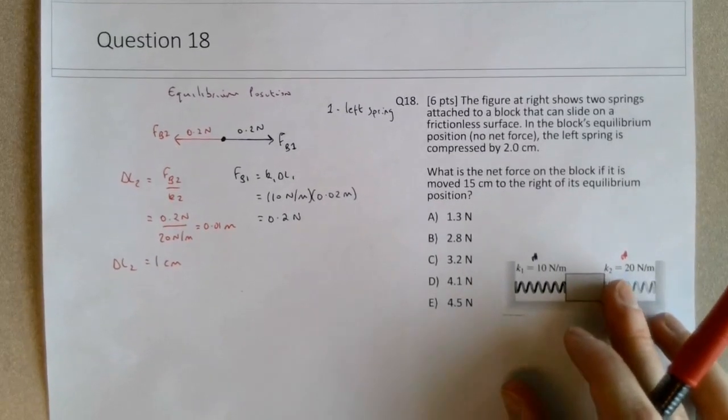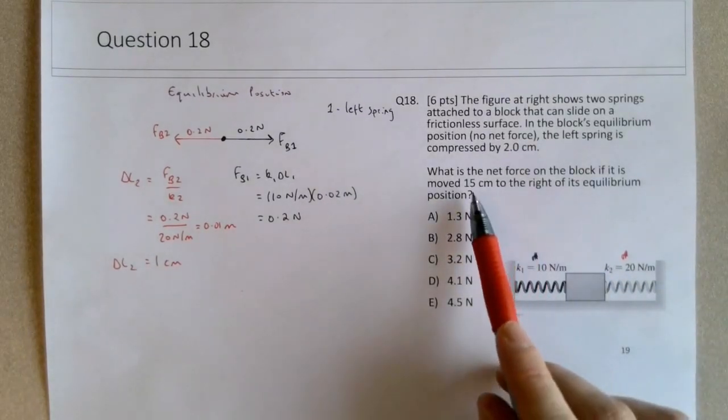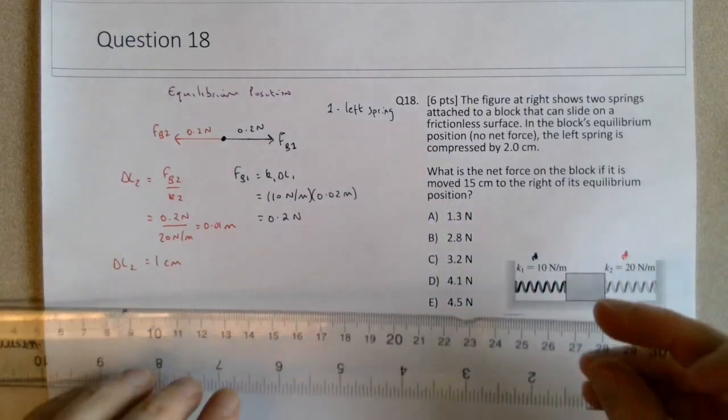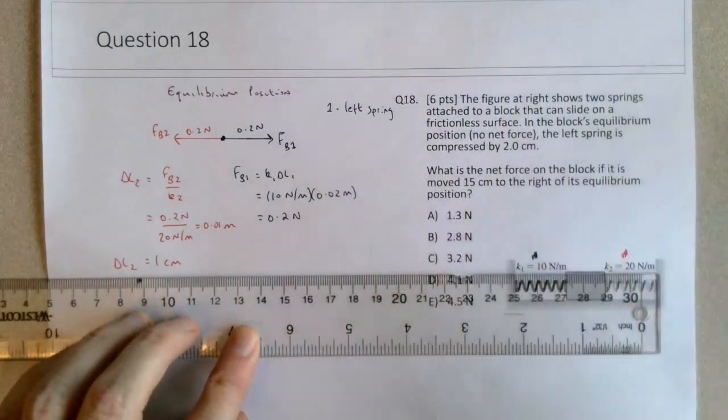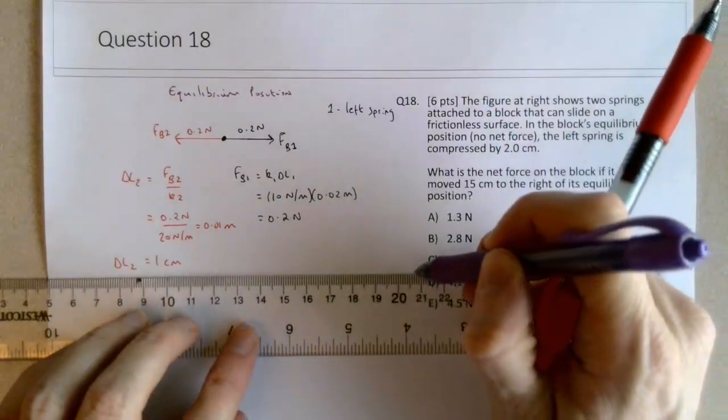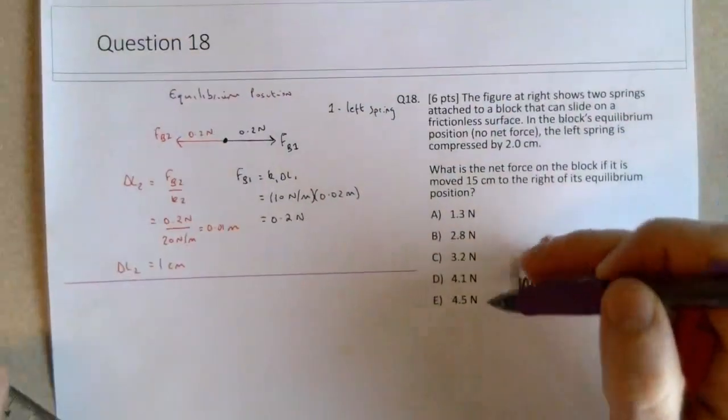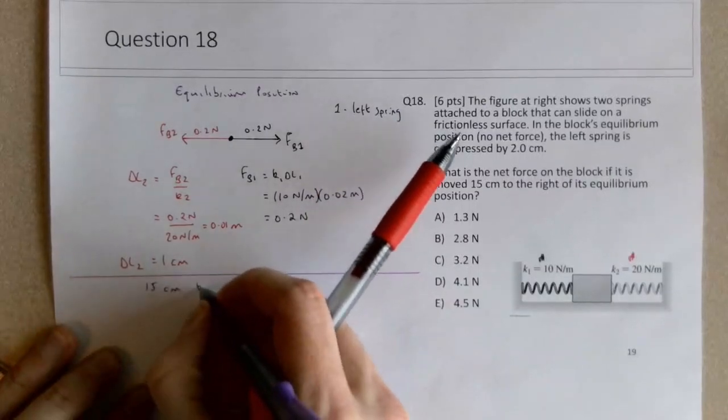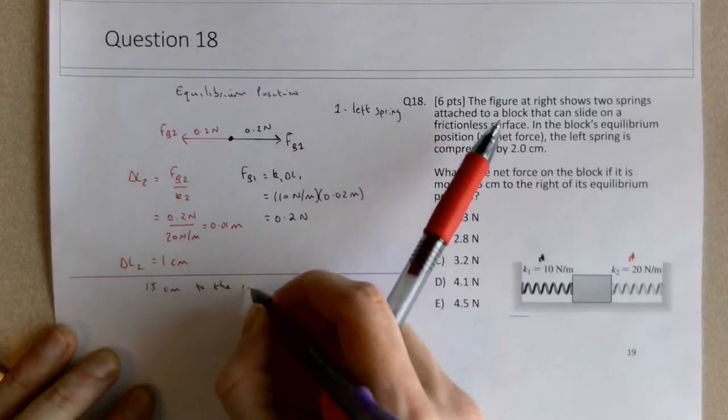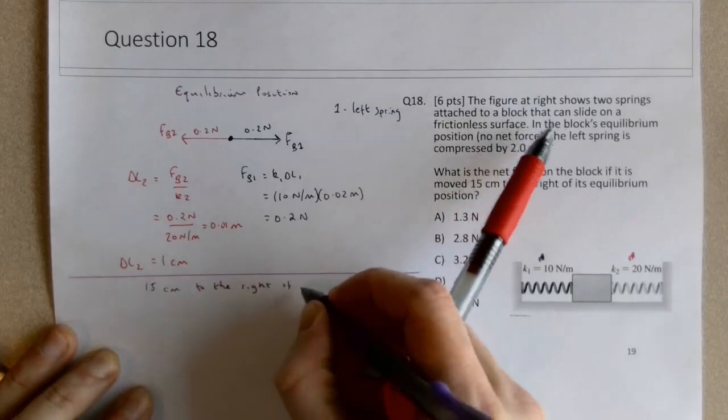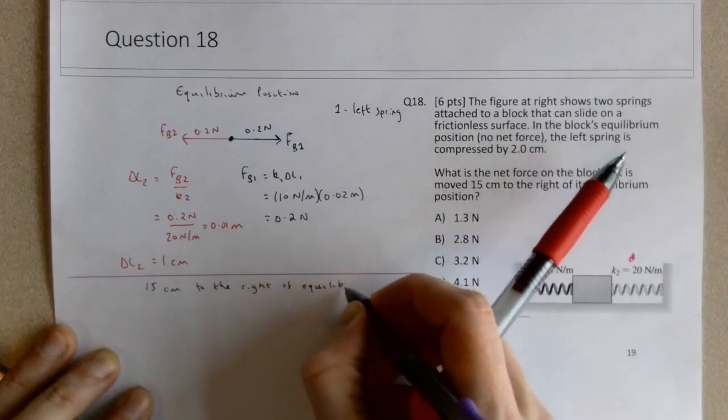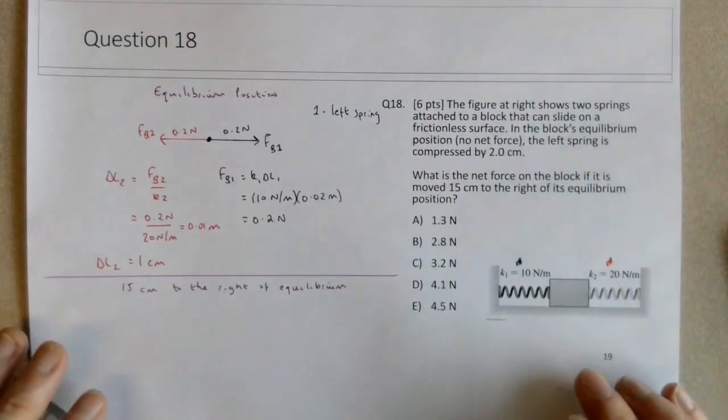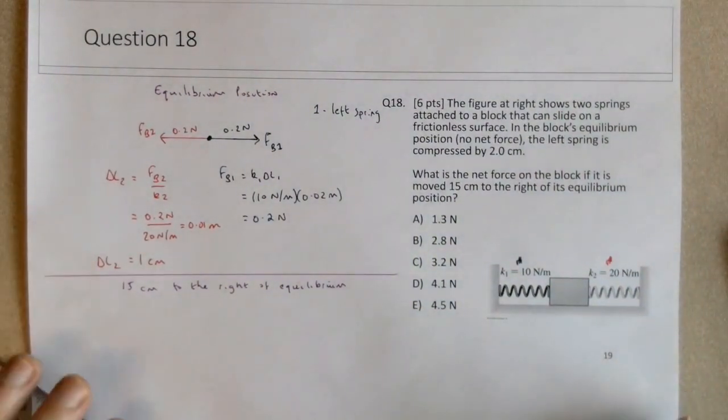And then the question states that if we move the block to the right 15 centimeters, what would the new net force be? So I'm going to sort of separate this work here. So let's consider the situation where the block is moving 15 centimeters to the right of the equilibrium. So we have to take this information into account.